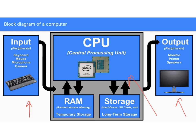When we're talking about input for a computer, we're talking about the peripherals: the keyboard, the mouse, the microphone, a camera — whatever devices allow data to go in. The keyboard and the mouse are typically the two most important.